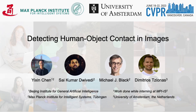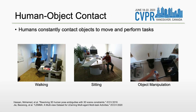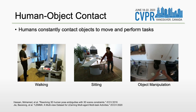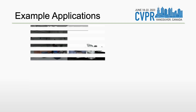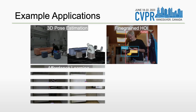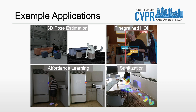We present our work: Detecting Human Object Contact in Images. Humans constantly contact objects to move and perform tasks, like walking, sitting, and object manipulation. Reasoning about contact is important for applications in many domains, such as 3D human pose estimation, understanding fine-grained human-object interaction, affordance learning, and sanitization.